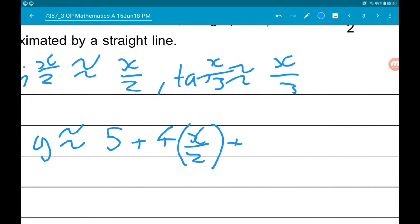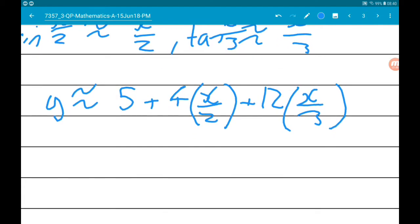So we get y is approximately 5 plus 2x plus 12 over 3, which is 4, so plus 4x.